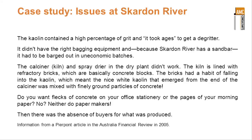The kiln that was designed to improve the quality of the kaolin, and the spray dryer, didn't work. The kiln is 60 metres long — a large piece of equipment in northern Australia — but it doesn't work satisfactorily. The primary reason was that the bricks inside the kiln, which is a heated process that heats the kaolin, had a habit of falling into the kaolin. This meant the nice white kaolin that emerged from the end of the calciner was mixed with finely ground particles of concrete. Nobody wants finely ground particles of concrete in their newspaper.